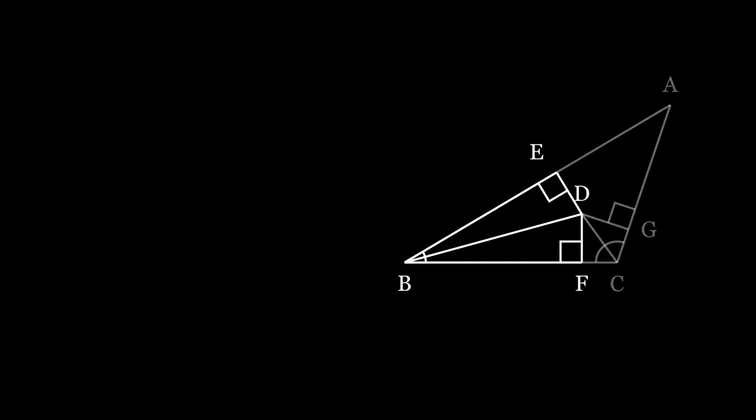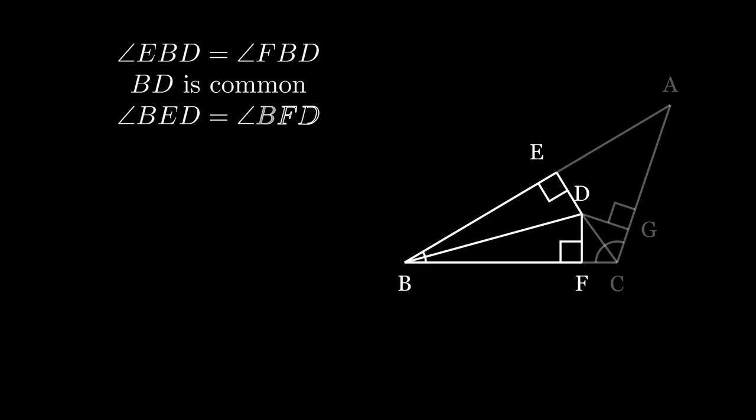Notice triangle BED and BFD. Angles EBD and angle FBD are equal because the angles at B were bisected. BD is common, and angle BED is equal to angle BFD because they are both right angles. Therefore, these two triangles are congruent and DE is equal to DF.